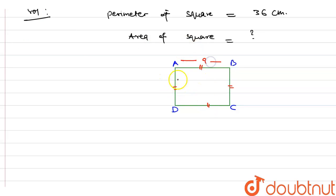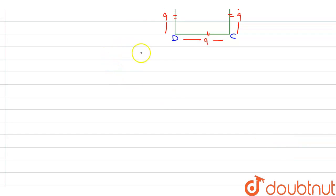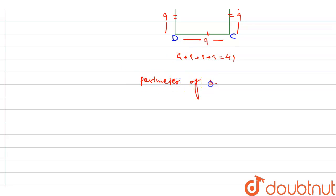So suppose that each side is A. As we know, the formula for perimeter is the sum of all the sides. When we do A plus A plus A plus A, that will be 4A. So the perimeter of square equals 4 into A.